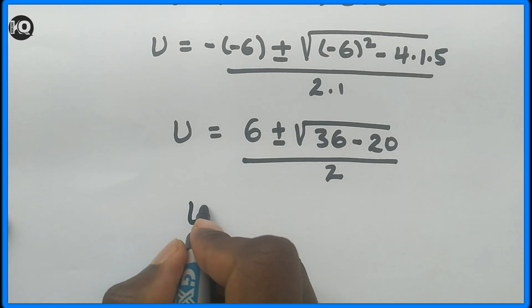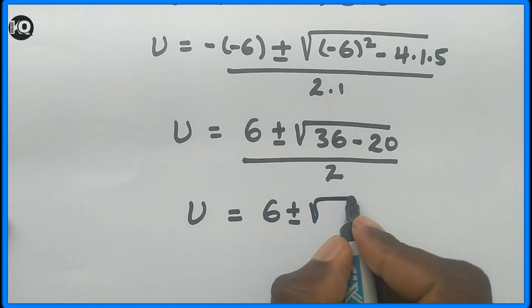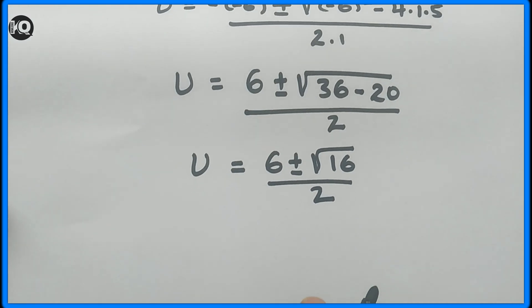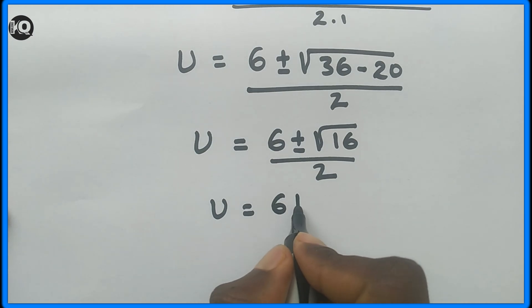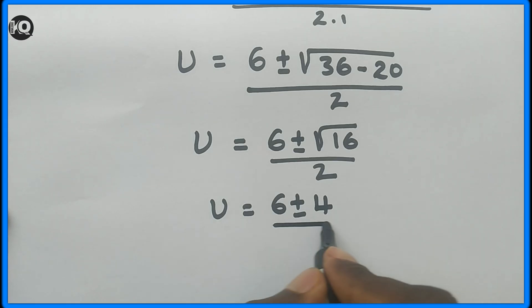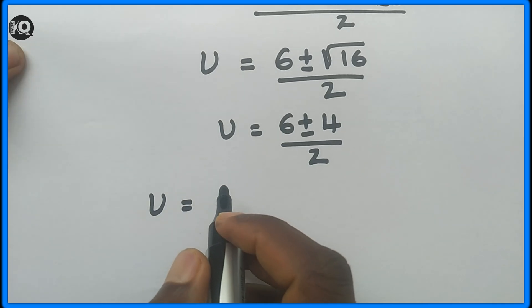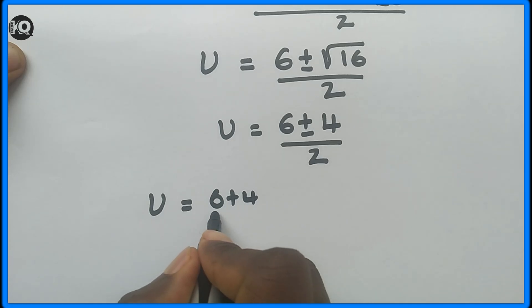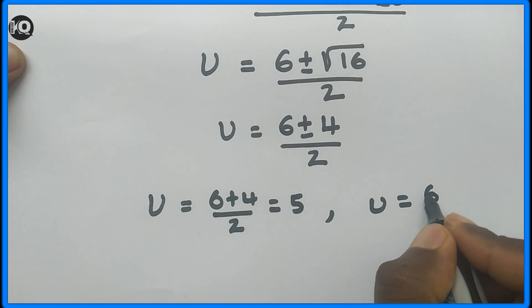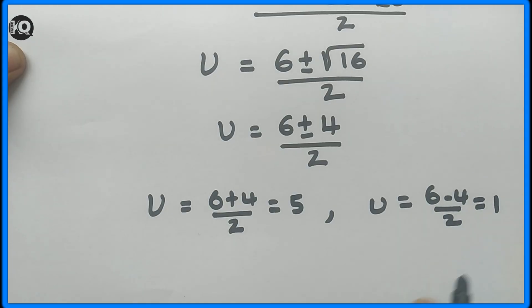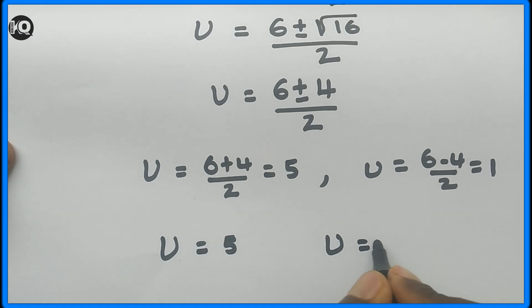This gives u equals 6 plus or minus the square root of 16, divided by 2, which equals 6 plus or minus 4, divided by 2. So we have two solutions: u equals (6 plus 4) divided by 2 equals 5, and u equals (6 minus 4) divided by 2 equals 1.